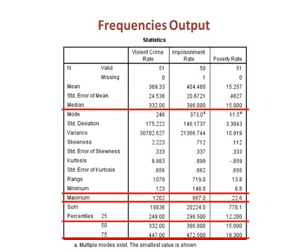Here is the output from the Frequencies command. This output was generated as part of our example in the first video. Here the positional measures on the output from the first video are highlighted. We have all the numbers except for the range and interquartile range, which we could calculate by hand from the numbers in the Frequencies output.